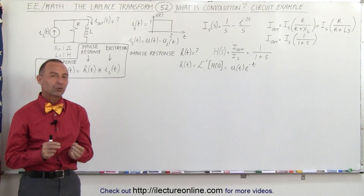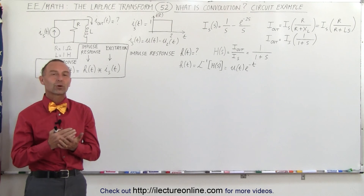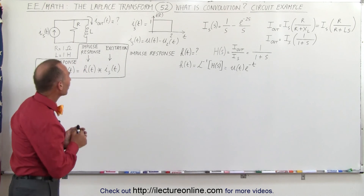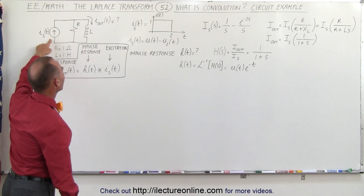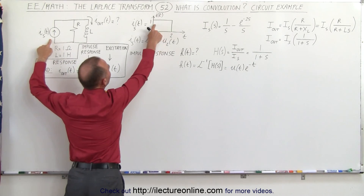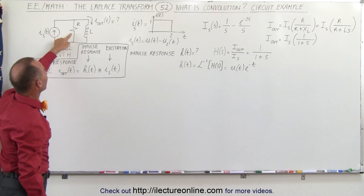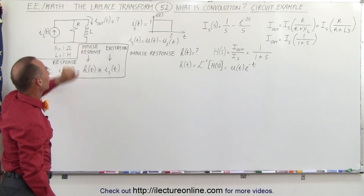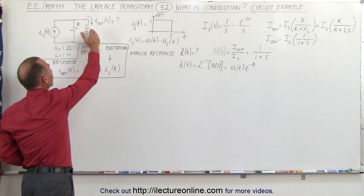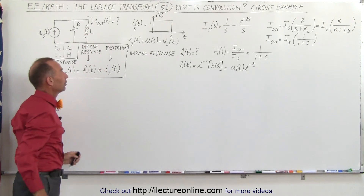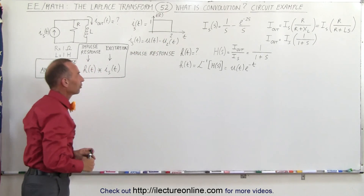Welcome to Electronline. Here's a really nice example of why convolution works so nicely. We're starting with a very simple circuit. We have a current source that puts out 1 amp for a period of 2 seconds. The circuit consists of a resistor and an inductor in parallel. What we're trying to calculate is the current response through the inductor due to the 2-second, 1-amp current input.